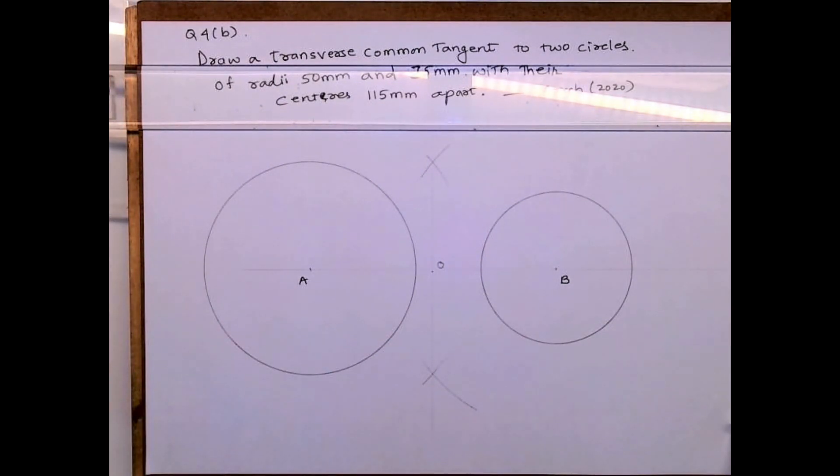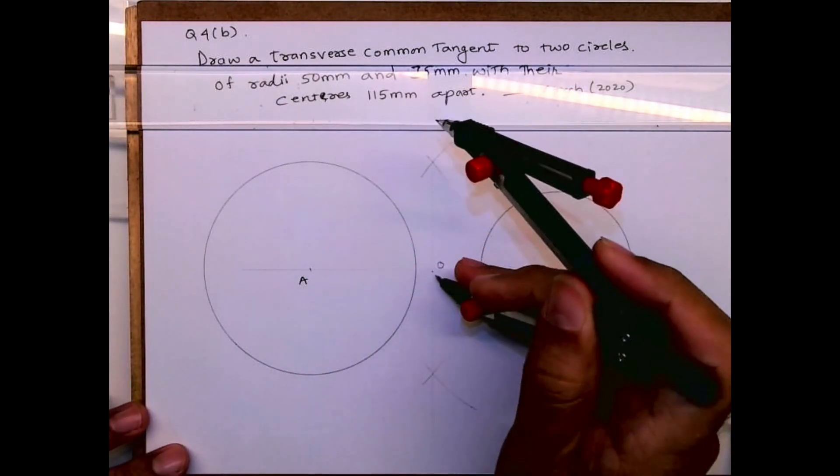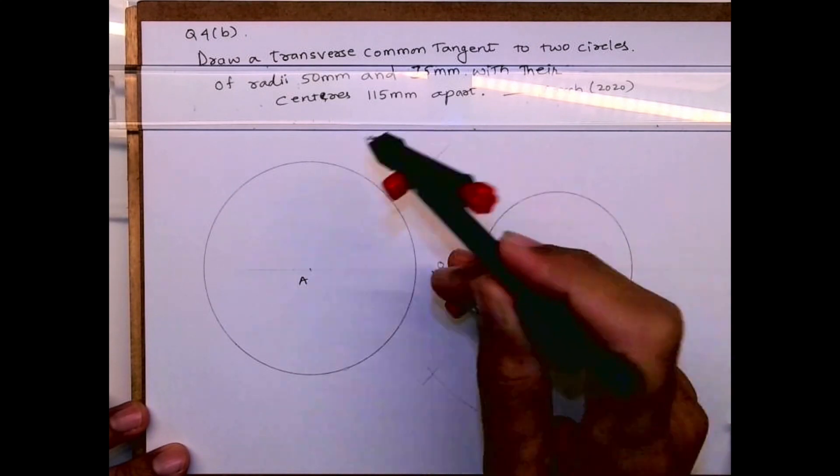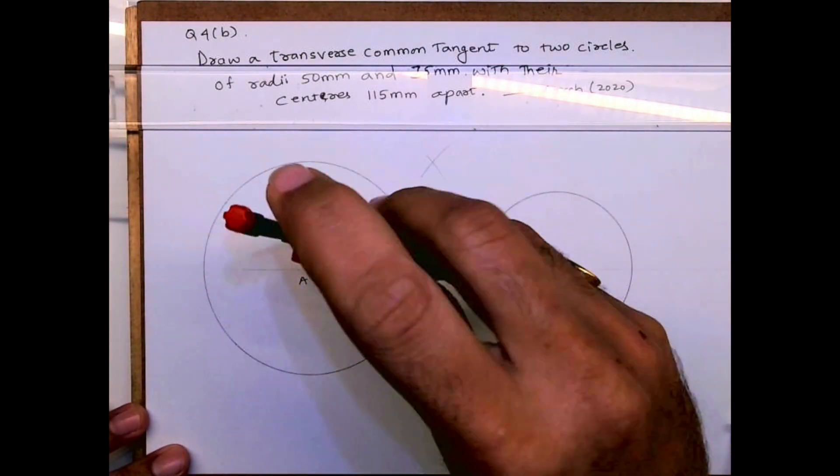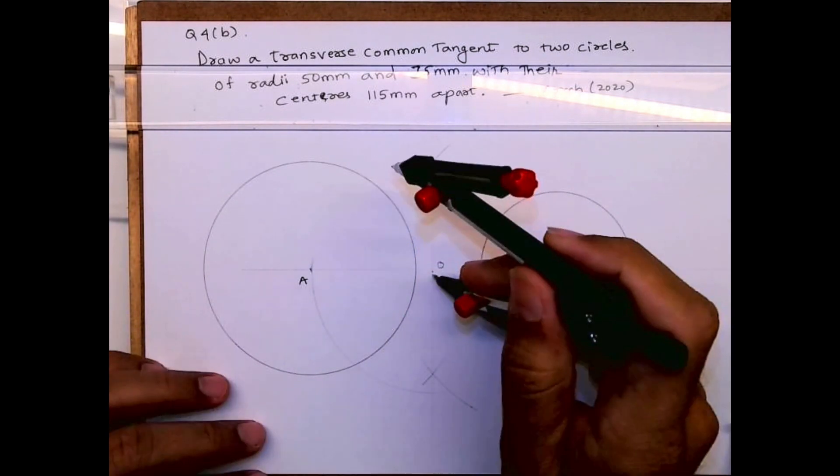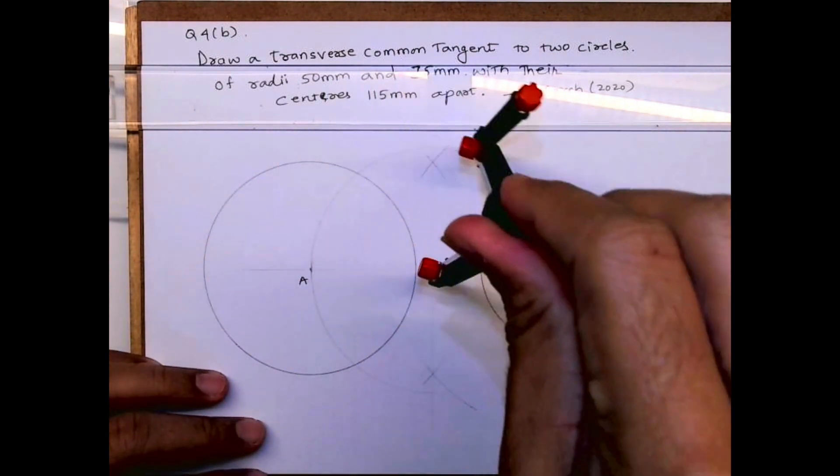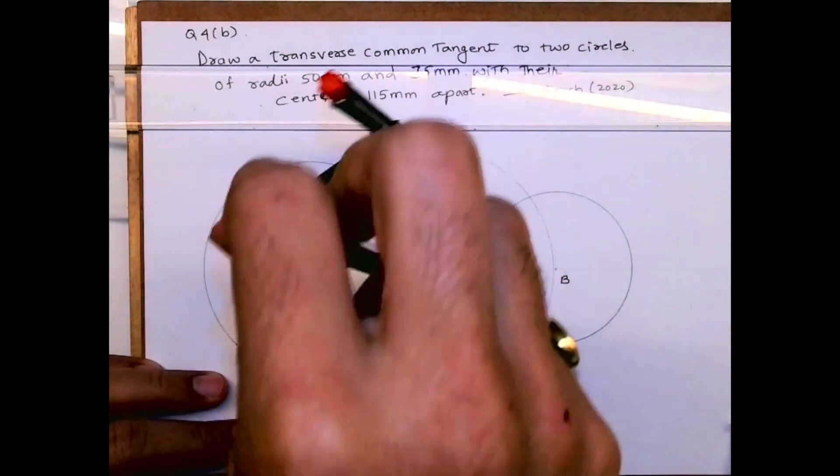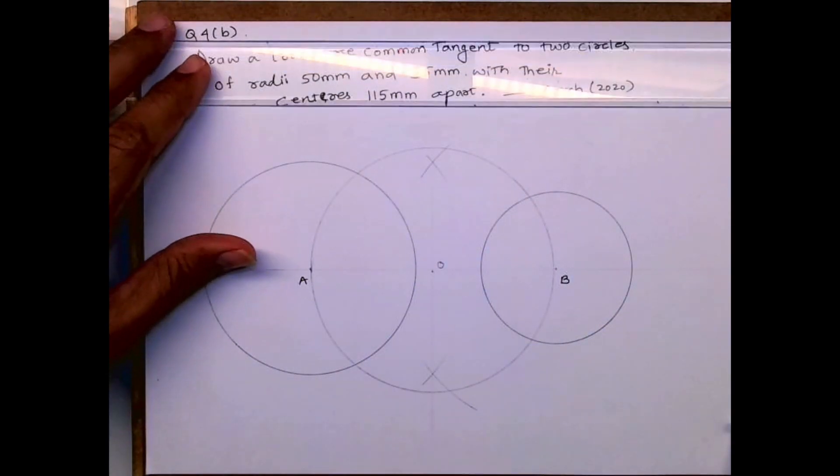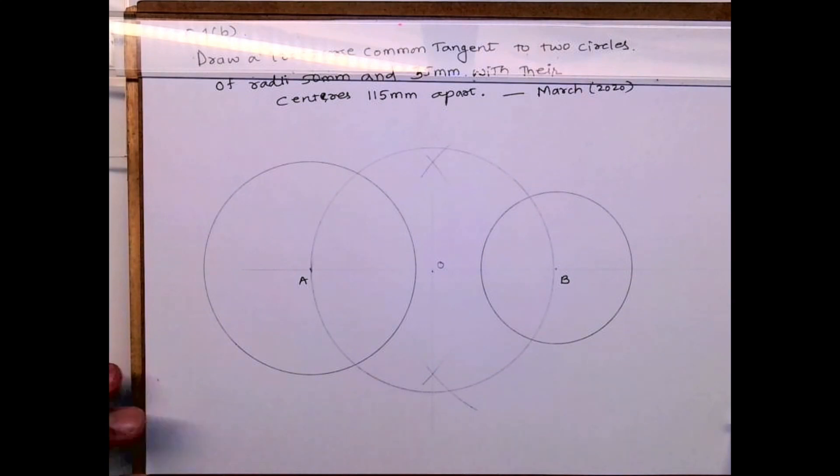Now we'll take O to A and we'll draw circle.